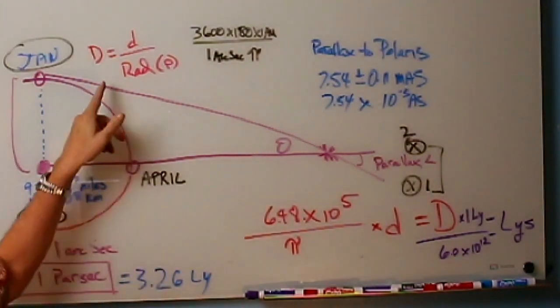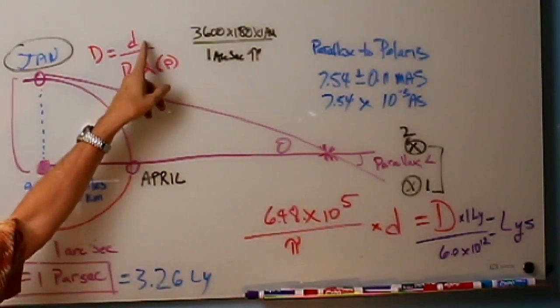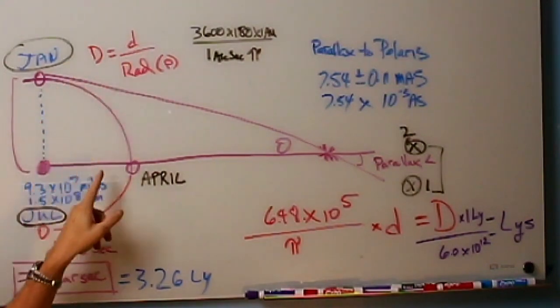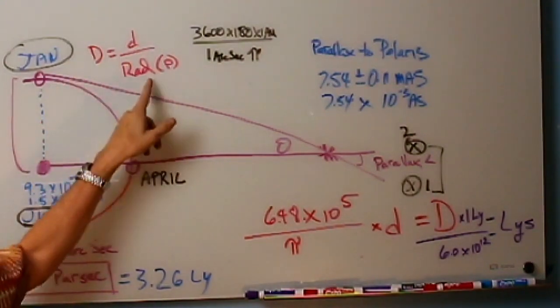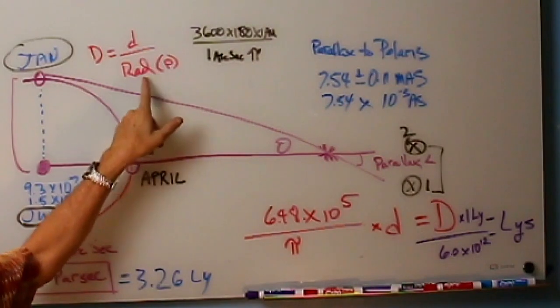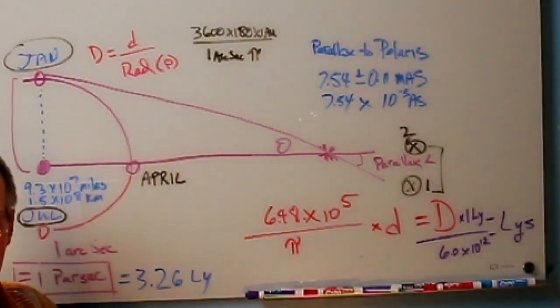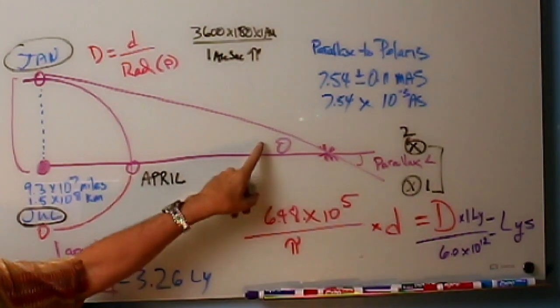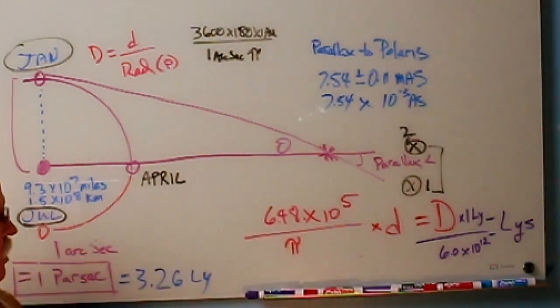Now by measuring the amount of that jump, we can get this angle right here, and this is called the parallax angle. Then by using a rather simple formula, we take the distance between our two observing points and this angle in what we call radians, and then we calculate the distance to that star. Now, this angle is extremely small.